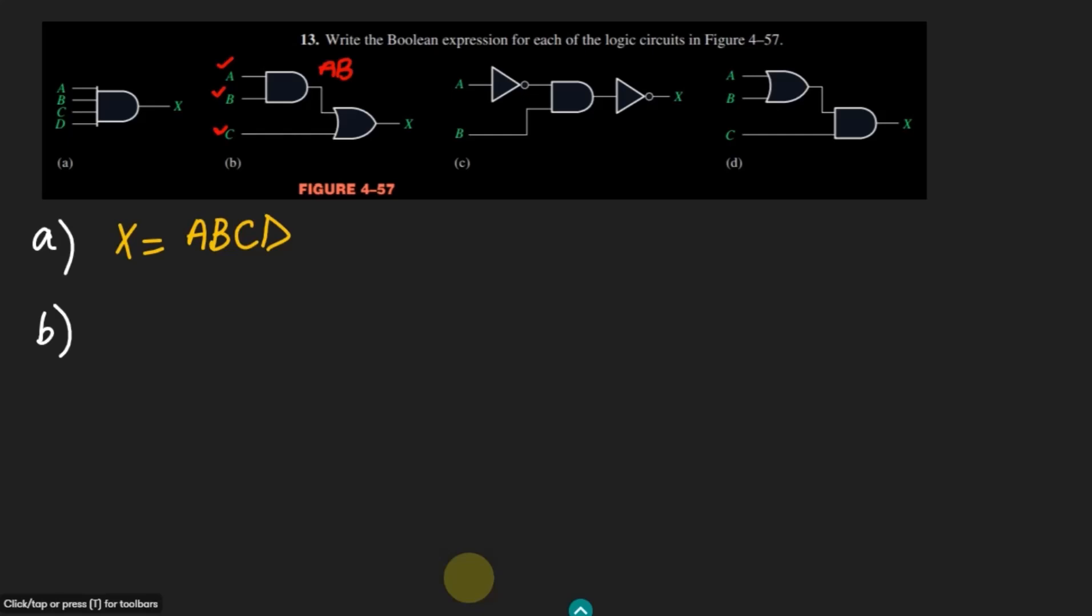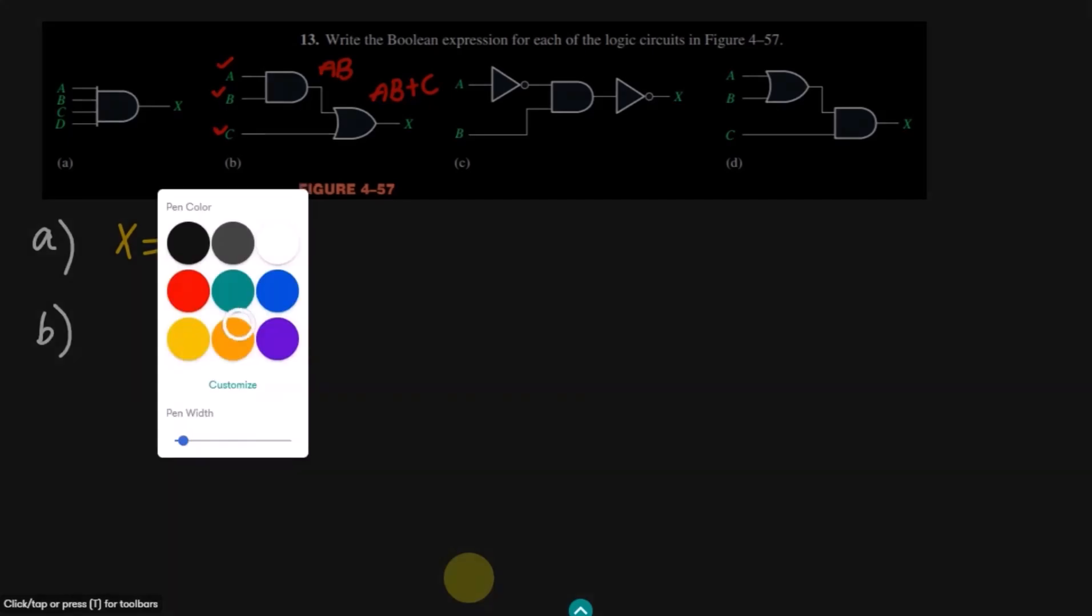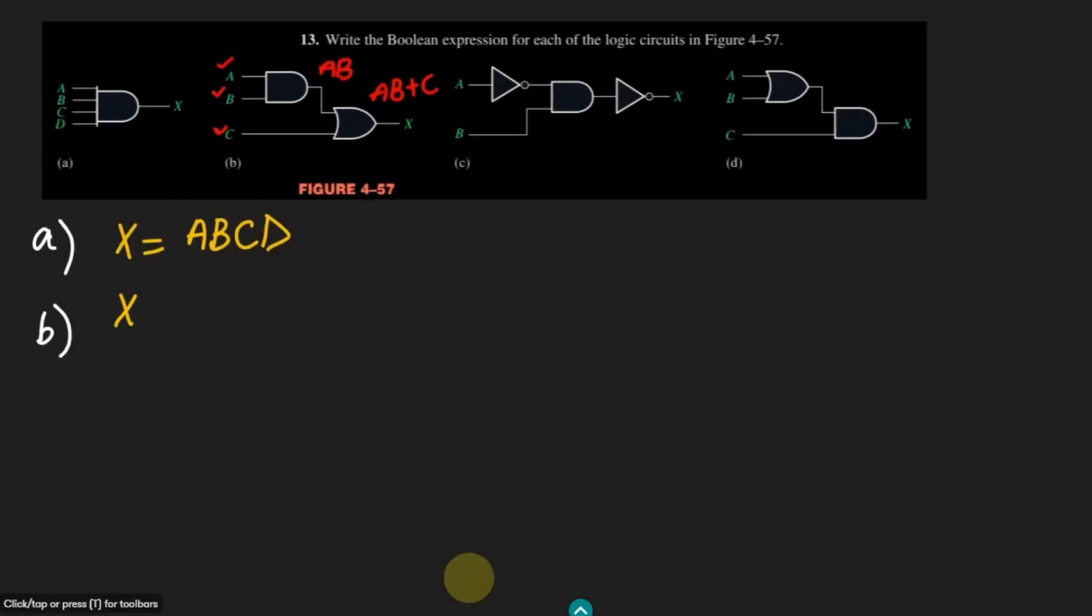Then this AB and this C will be given to this OR gate and we will see that this AB and C will be added together and here we will get AB plus C. So that would be the output here. Therefore the answer of my question here will be AB plus C due to the operations which are performed by these circuits.